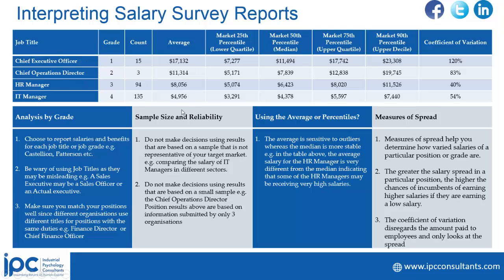When you look at this kind of information that I've presented here, you will find we've got four positions: chief executive officer, chief operations director, HR manager, and IT manager — and then you've got your grade. These grades could be your own grading system or a universal grading system. There are tables to cross-validate these grading systems — for example, Patterson or other grading systems.